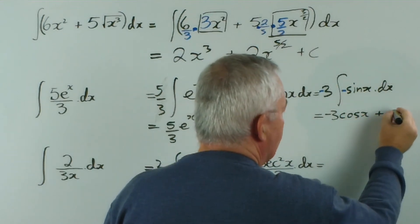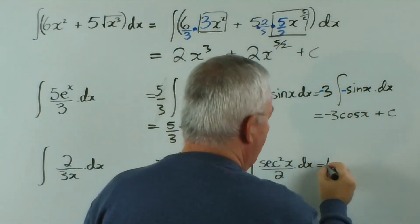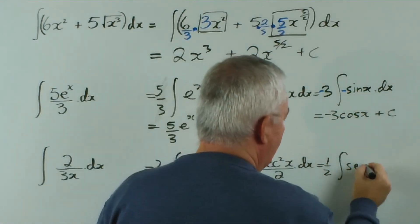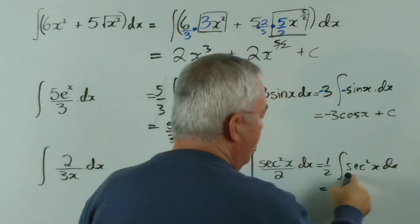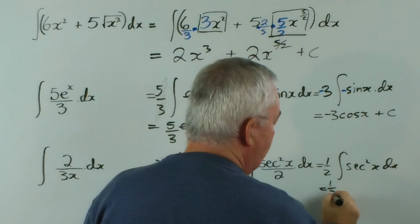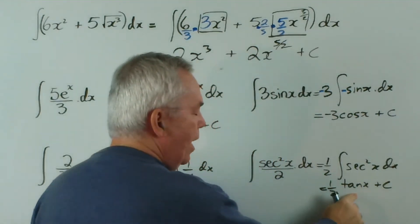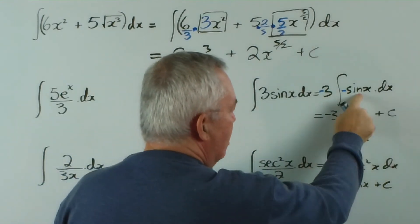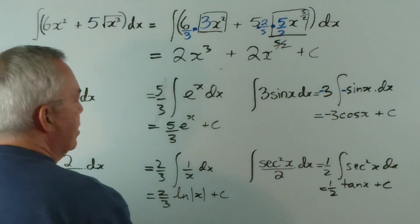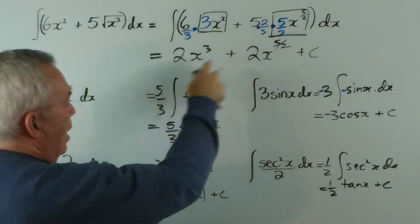And this one here, we'd move the half out the front. The integral of sec squared is a pure integral, tan x, because the derivative of tan x is sec squared x. The derivative of cosine is minus sine or negative sine x, derivative of e to the x, derivative of log x is one on x, et cetera.